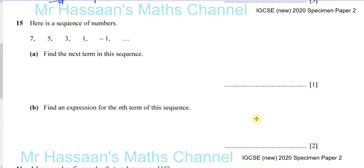Okay, now for question number 15 from the specimen paper for IGCSE 2020 Cambridge exam. Here we have a question about sequences. It says, here is a sequence of numbers: 7, 5, 3, 1, minus 1.